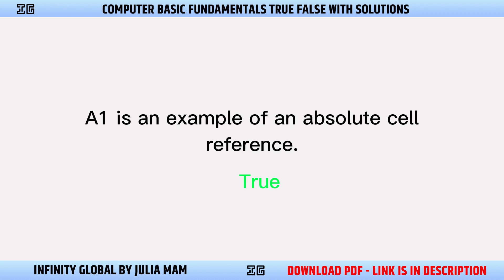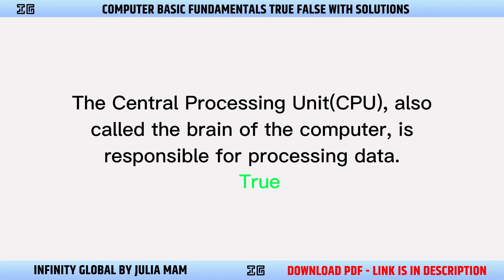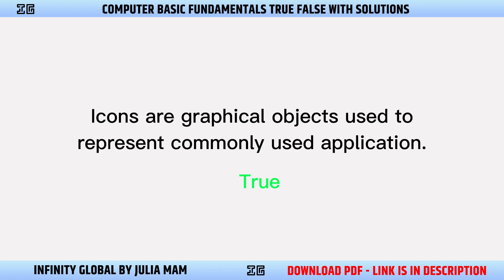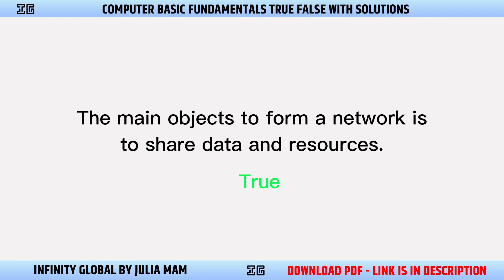A1 is an example of an absolute cell reference. True. The central processing unit (CPU), also called the brain of the computer, is responsible for processing data. True. Icons are graphical objects used to represent commonly used applications. True. The main objective to form a network is to share data and resources. True.